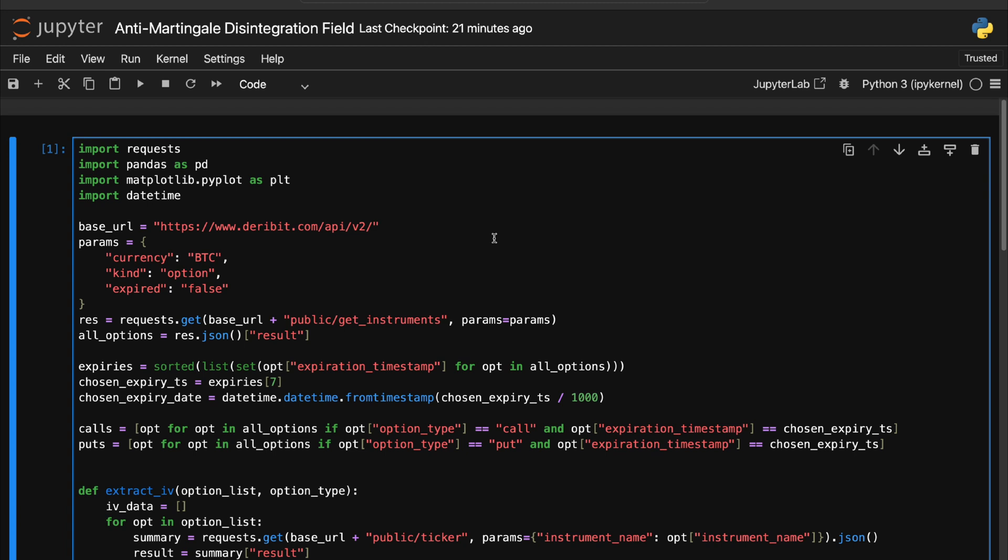Last but not least, let me quickly show you how I pulled this volatility smile using Python and the Deribit API. First, I'm loading all available Bitcoin option instruments. So I'm hitting Deribit's public API and filtering only for non-expired options. Then I'm extracting all the unique expiry timestamps and I'm picking one. In this case, I'm picking element 7, which corresponds to the August expiry.